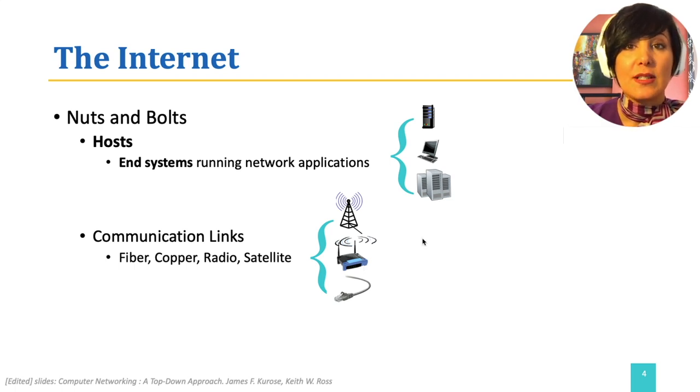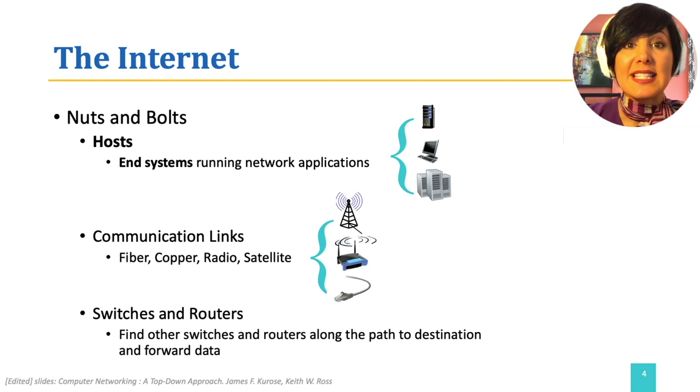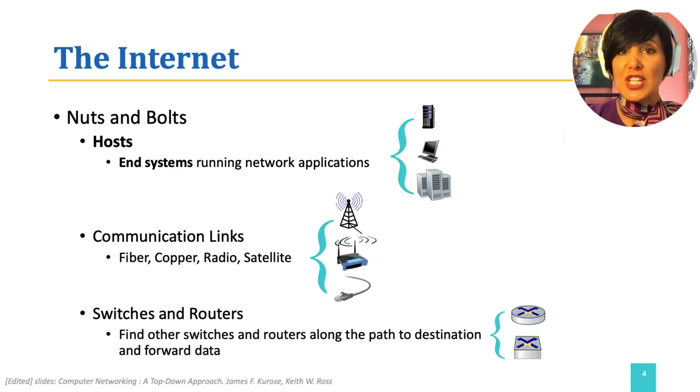Switches and routers are devices that are placed in the intersection of the communication links. They receive data in their incoming links and place it on their outgoing links. Switches do this using a mechanism called switching, and routers through a mechanism that is called routing. Later in this course, we will discuss the details of each of these functionalities.